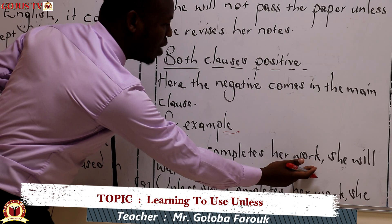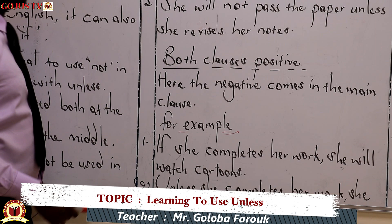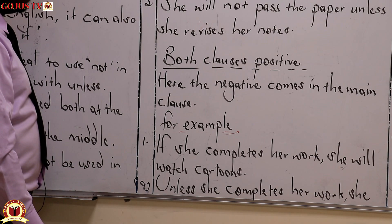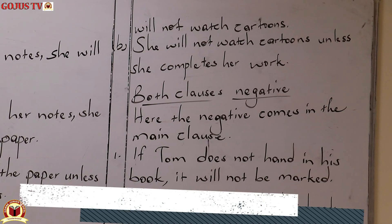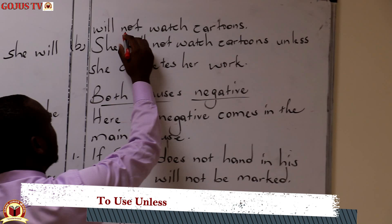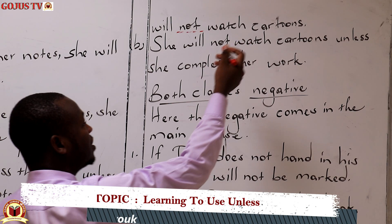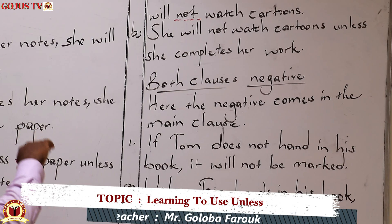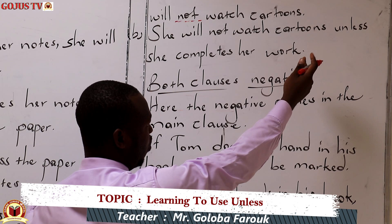For example: 'If she completes her work, she will watch cartoons.' Both clauses have no negative. The negativity will come in the main clause. So this will be: 'Unless she completes her work, she will not watch cartoons.' The 'not' comes in the main clause. Using 'unless' in the middle: 'She will not watch cartoons unless she completes her work.'